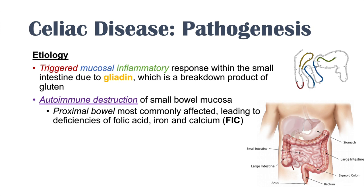is responsible for absorption of folic acid, iron, and calcium — you can remember that as FIC. These are the elements that often become deficient in celiac disease due to the autoimmune destruction and inflammatory response in the small intestines.